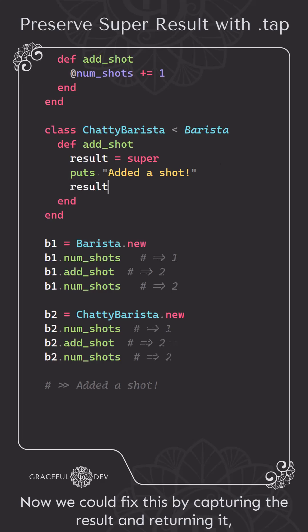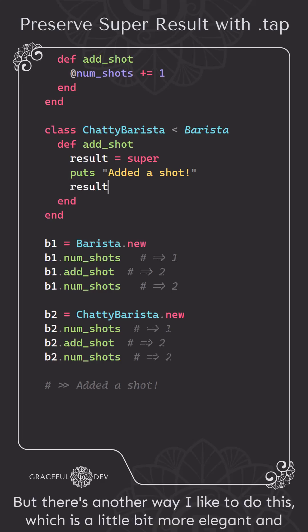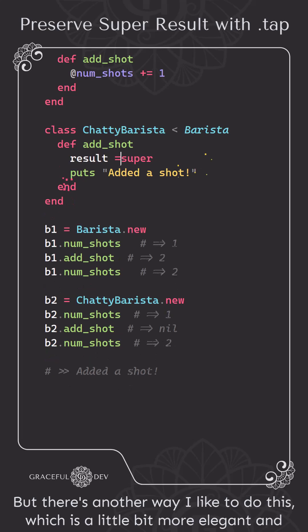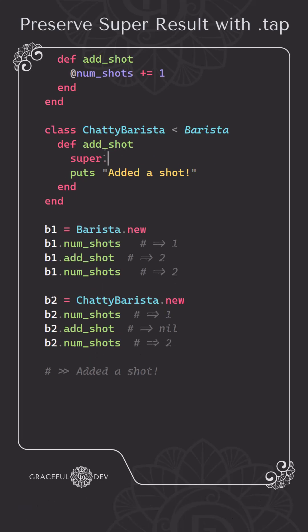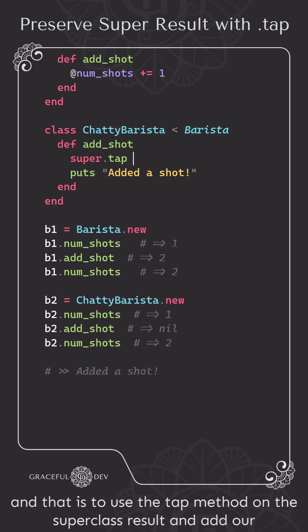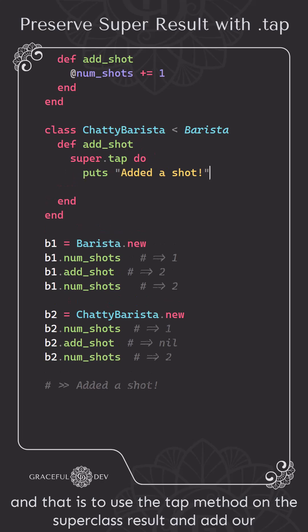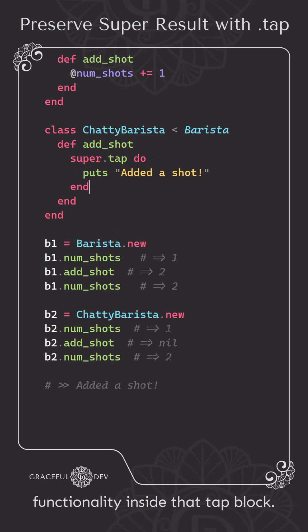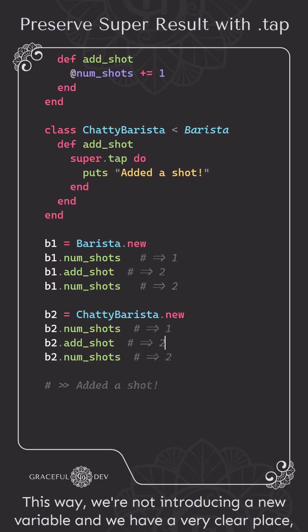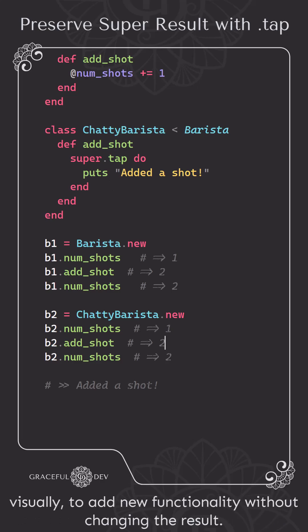Now we can fix this by capturing the result and returning it, but there's another way I like to do this which is a little bit more elegant and harder to screw up — and that is to use the tap method on the superclass result and add our functionality inside that tap block. This way we're not introducing a new variable, and we have a very clear place visually to add new functionality without changing the result.